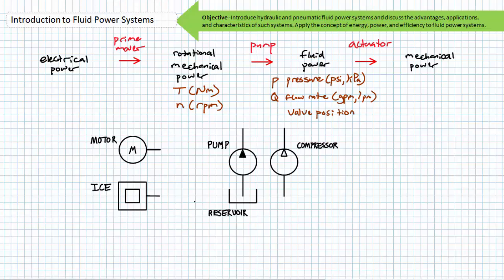The load-induced opposition to flow is what creates pressure. If the pump is just pumping into empty space, there's no pressure — and to top it off, a rapidly expanding pool of oil on the floor. To fully, truly, and holistically comprehend the conversion of mechanical power to fluid power necessitates an understanding of what is producing the torque and rotational speed in the first place.